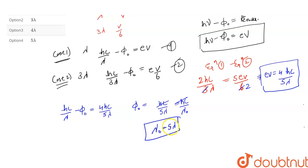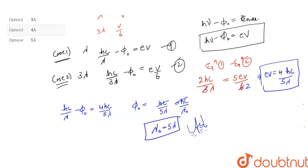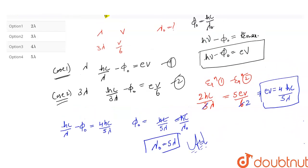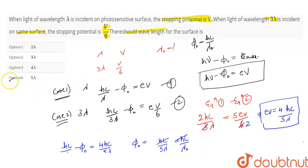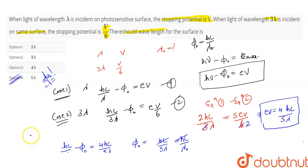Lambda naught is the threshold wavelength, and its value is 5 times lambda. Looking at the options, 5 lambda matches option number 4. So the answer to this question is option number 4. I hope this was clearly explained. Thank you.